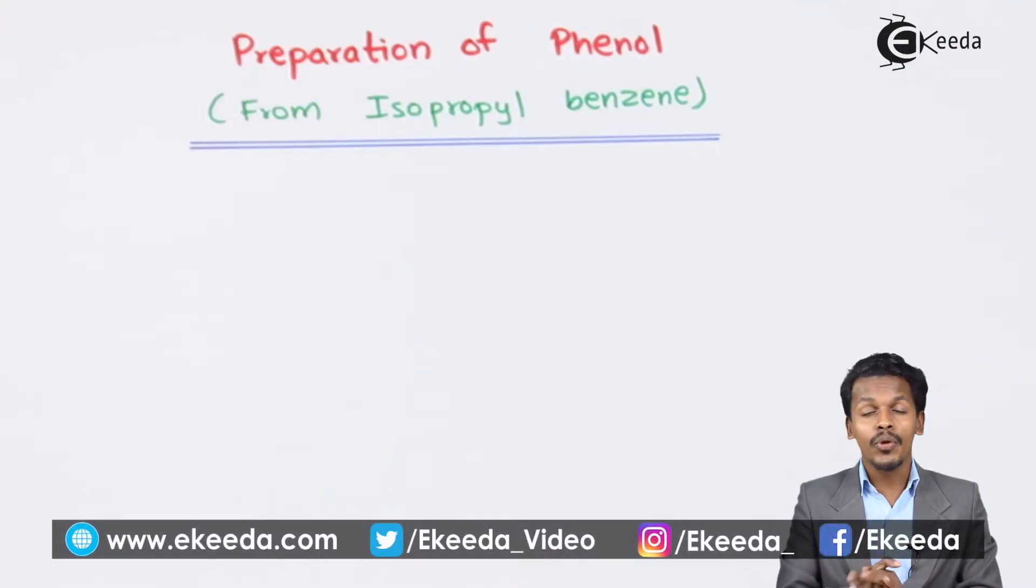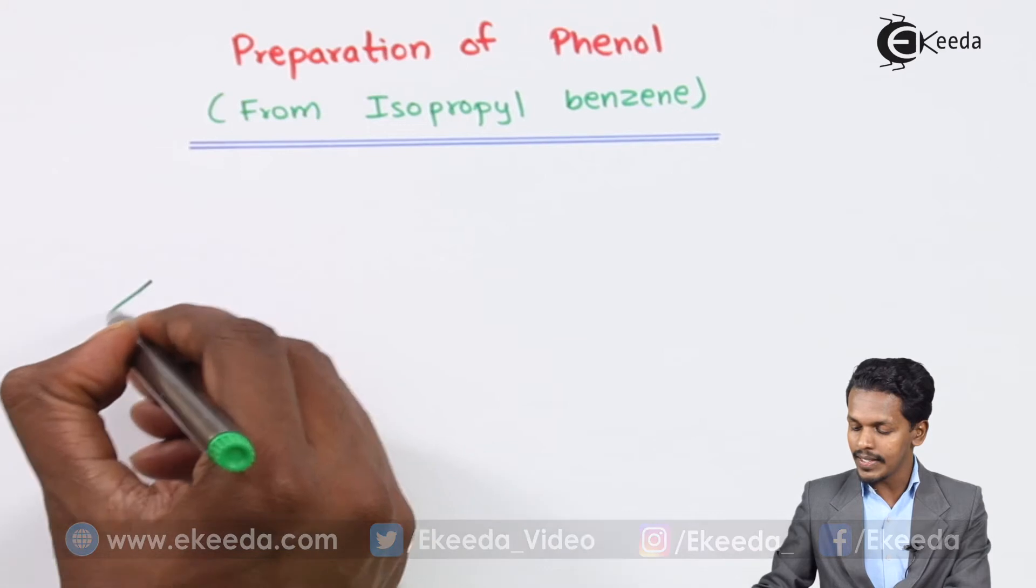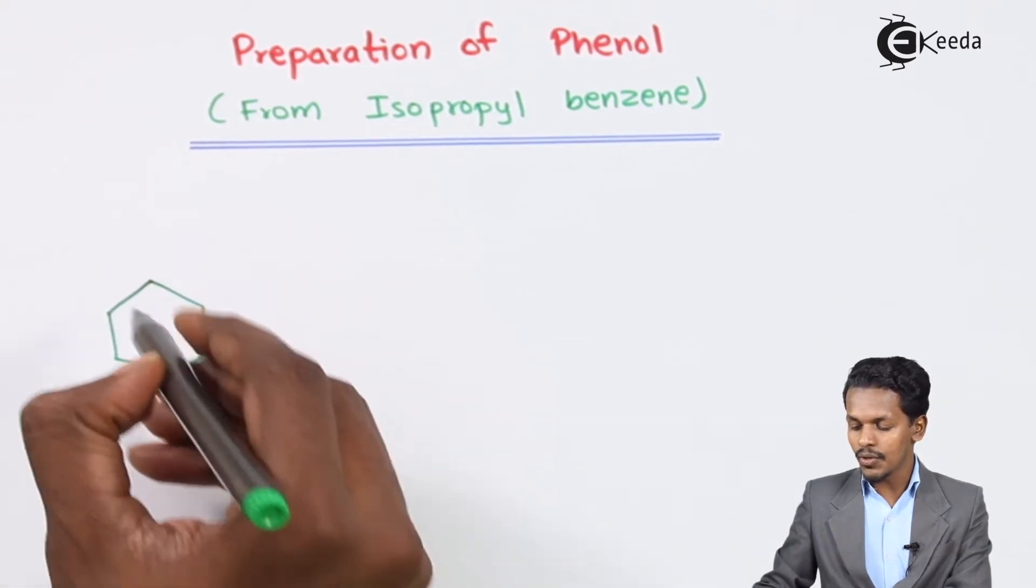In this topic we are going to talk about how we can convert isopropyl benzene into phenol. It is a two-step process. For example, if I am considering isopropyl benzene, which is also known as cumene.